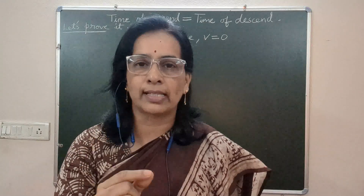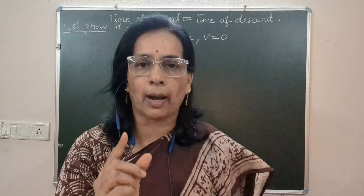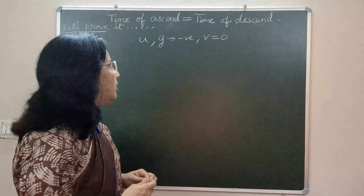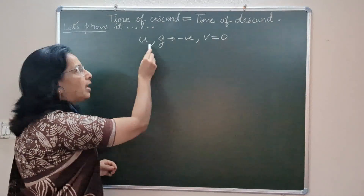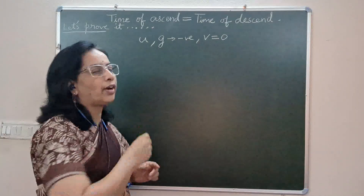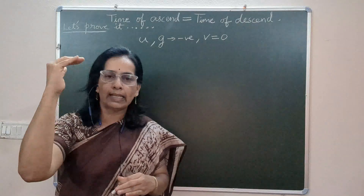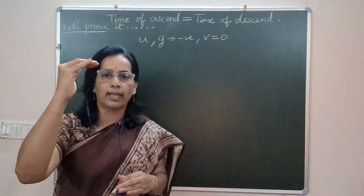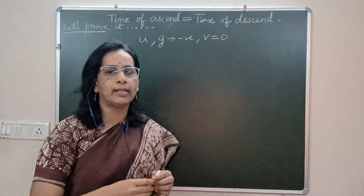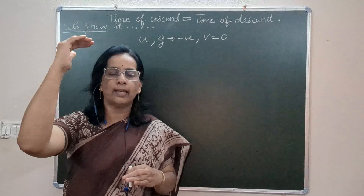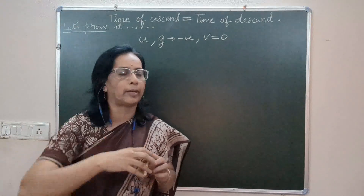Let us begin with time of ascent — that is when an object is thrown vertically upwards. It is thrown with an initial velocity u. Acceleration is negative because while going upward, the object decelerates as it is going against the gravity of earth. The final velocity has to be zero, because at the maximum height the object's final velocity becomes zero and then it takes a free fall.